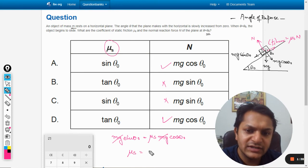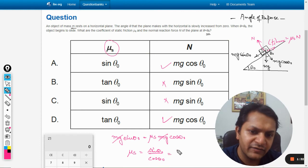mg cancels out with mg, so μs comes out to be equal to sin theta divided by cos theta, which will be tan theta naught.